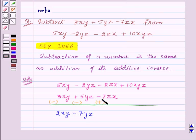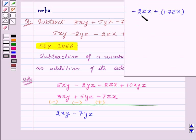Similarly, subtracting minus 7zx from minus 2zx is same as adding plus 7zx to minus 2zx. Minus 2zx plus plus 7zx is equal to minus 2zx plus 7zx which is equal to plus 5zx.